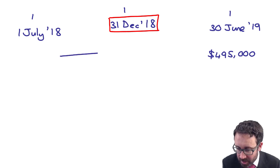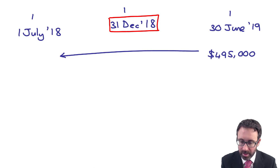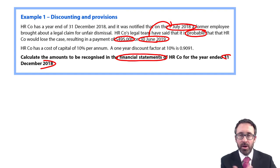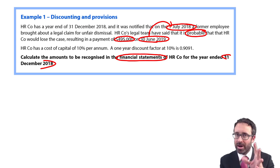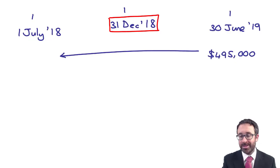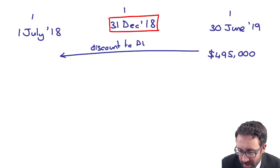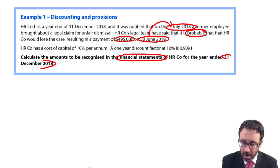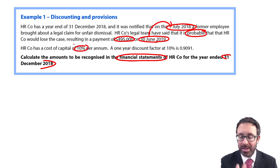We need to recognize the provision before we think about what happens at the reporting date. We need to recognize the provision at the 1st of July 2018 — because that's when we were notified, when the employee brought about the legal claim. So we need to discount that $495,000 to present value. At what rate? We're told the cost of capital is 10% — that's your discount rate.